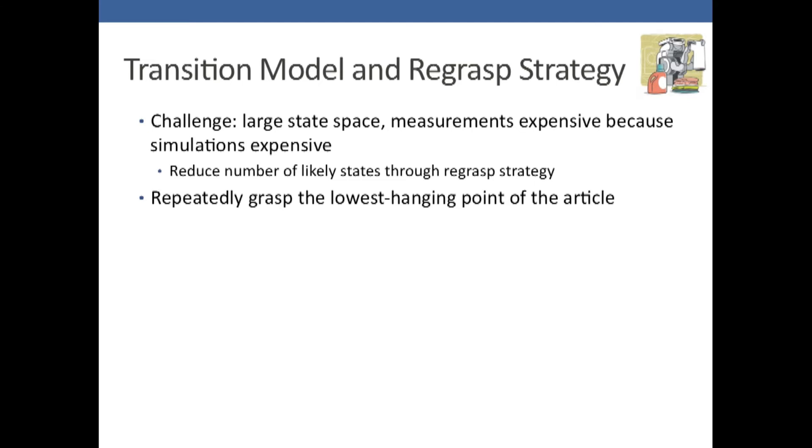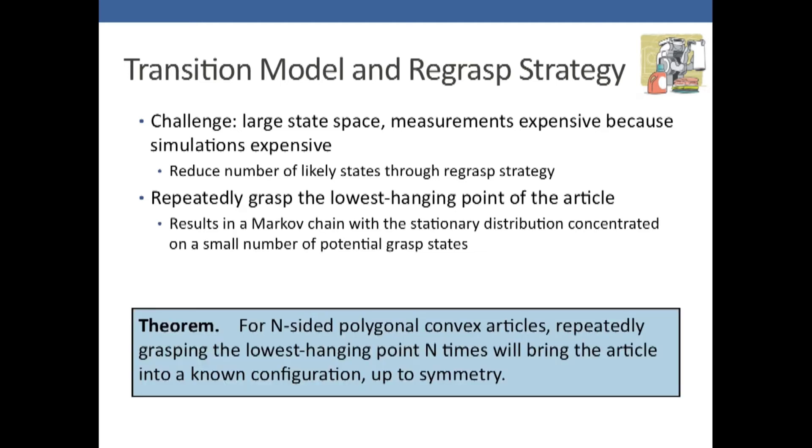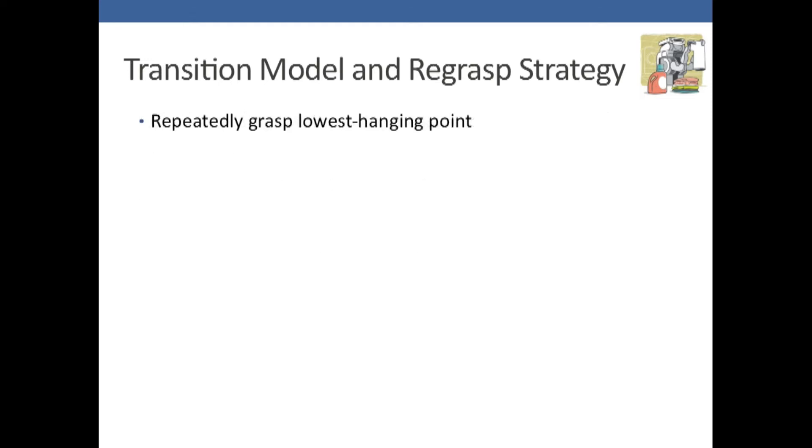What we do is repeatedly grasp the lowest hanging point of the article, and this results in a Markov chain with a stationary distribution concentrated on a small number of potential grasp states. We can formalize this for polygonal convex shapes. For an n-sided polygonal convex article, repeatedly grasping the lowest hanging point n times will bring the article into a known configuration up to symmetry.